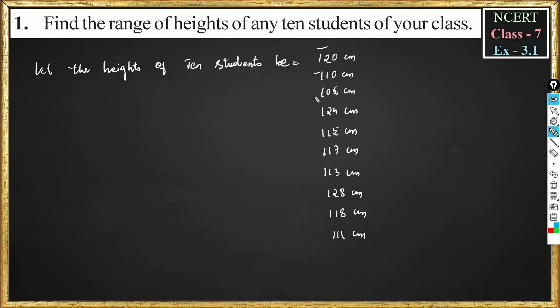1, 2, 3, 4, 5, 6, 7, 8, 9, 10. Now in the question it is asked to find the range of these heights. Range is largest observation minus smallest observation. In this data, largest observation is 128 centimeters, so 128 minus smallest observation is 105 centimeters. 128 minus 105 is 23. That means 23 is the range of heights of 10 students we have taken.